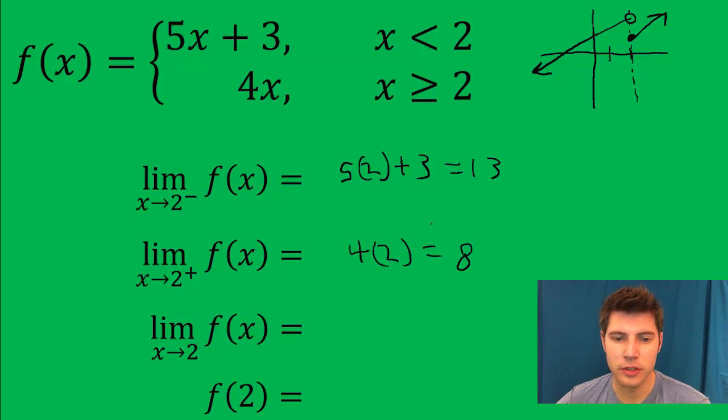So now we have both those answers. The limit as x approaches 2 only exists if these two are equal to each other. Since they are not, the limit does not exist.